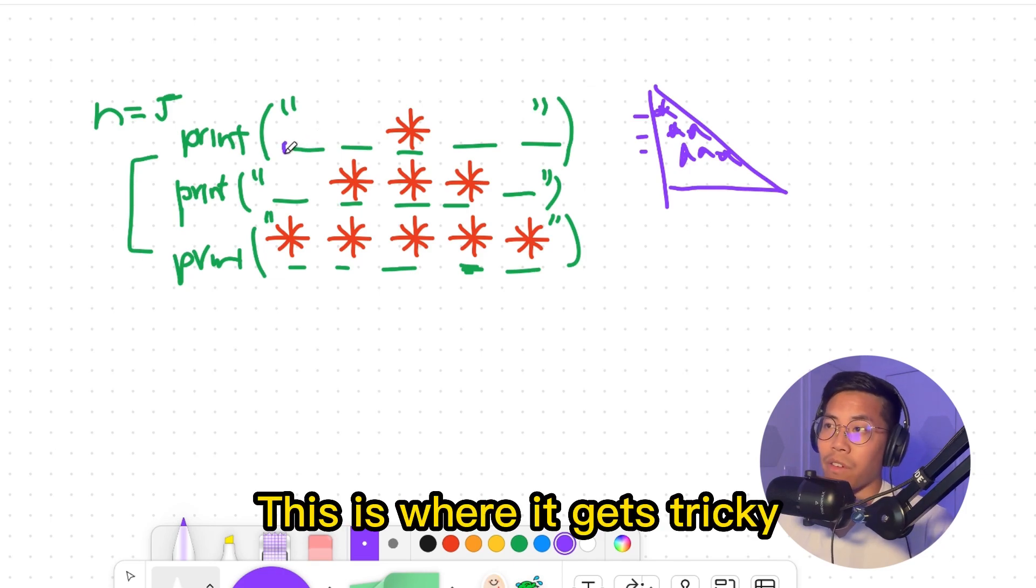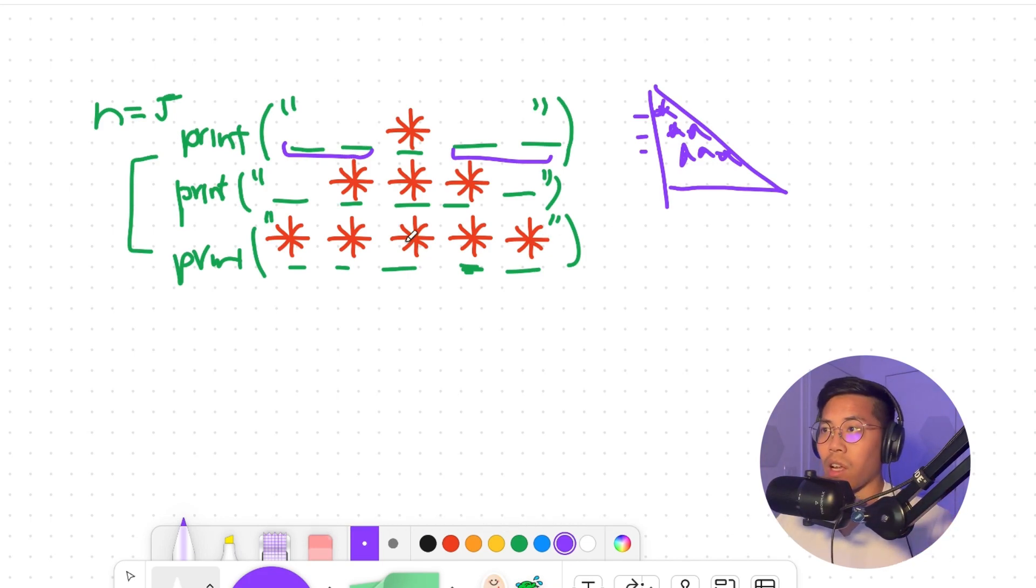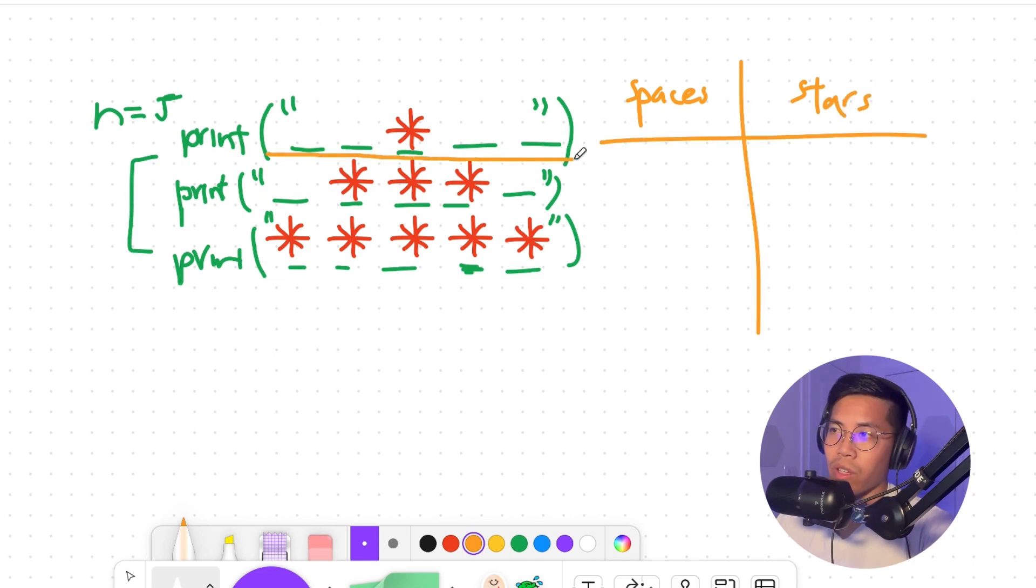However, in this problem, we have to figure out how many spaces we have to print along with the stars. To figure this out, it's very important that we try to look for a pattern. To help you guys better understand this problem, I'm going to create a table that has two columns, one for the number of spaces, and one for the number of stars. First row here, we have four spaces in total, and there's one star.